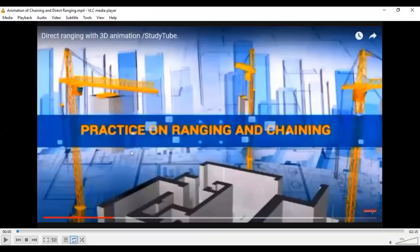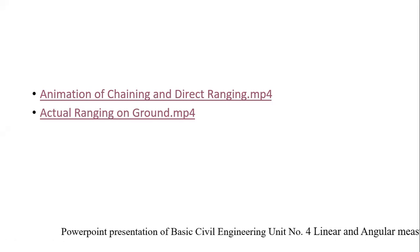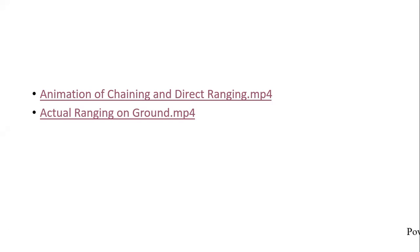The ranging operation we have seen is direct ranging, in which both station points A and B are visible to us. Now we will see how it actually looks on the ground, as the animation has been shown; I will show you the actual ranging done on the ground.